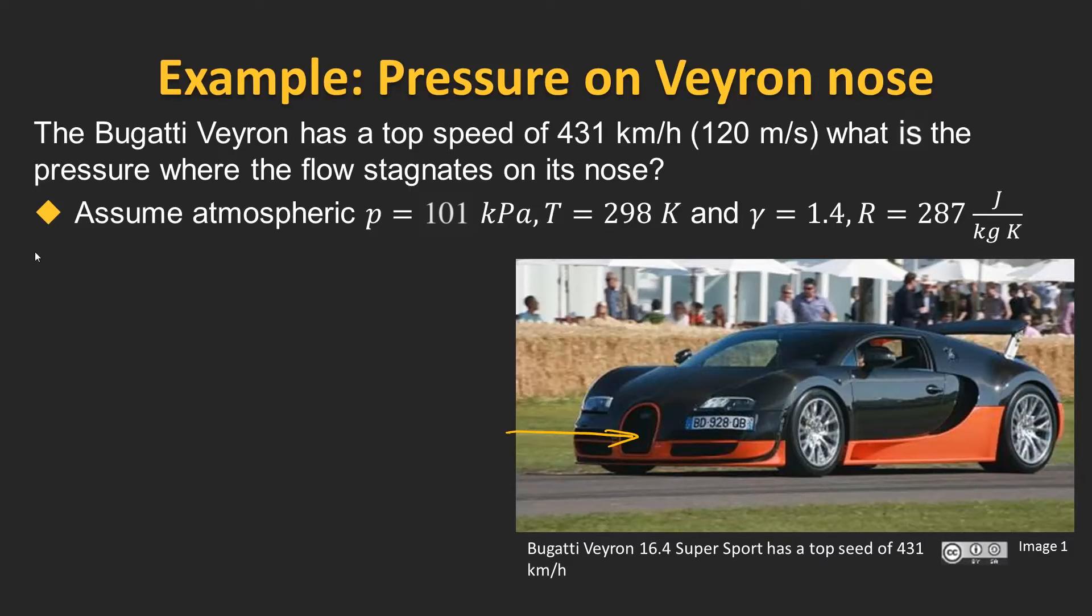So the first thing we need to do is to calculate the Mach number M, which is equal to the speed of the vehicle divided by the sound speed A, and we know that the sound speed is the square root of gamma RT.